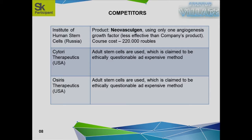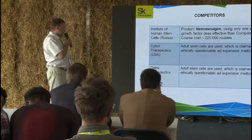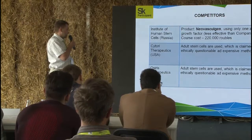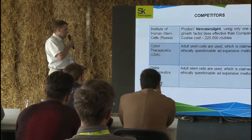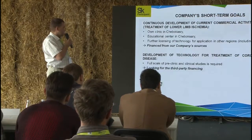Our competitors use drugs for therapeutic angiogenesis, which are less effective than our company's product and cost 220,000 rubles. There are also stem cell-based products, but they are not allowed for use in Russia.